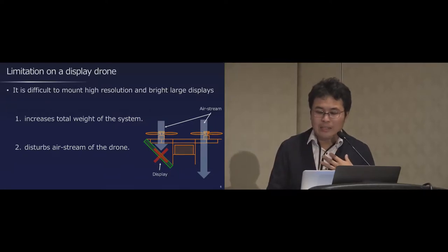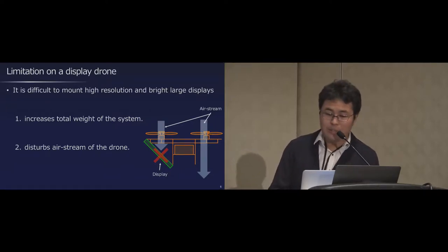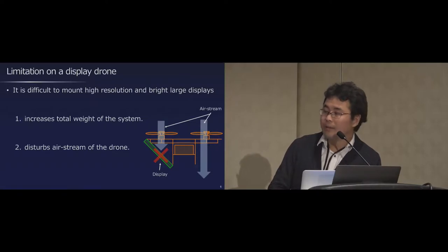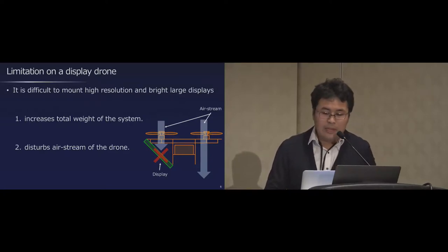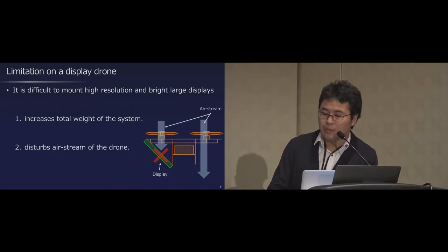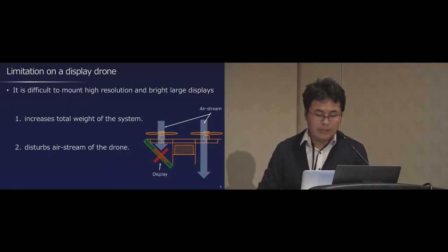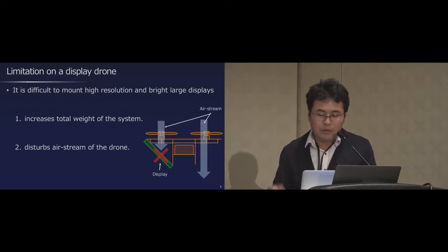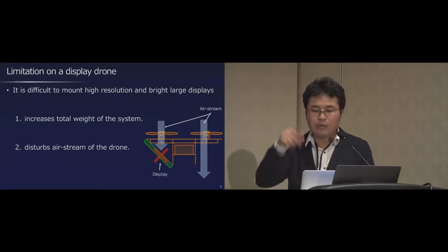However, few research has proposed high resolution and bright large display on drone. It may be because of two reasons. One reason is that high resolution large display increases the total weight of the system, so it makes it impossible to fly. The other reason is that the display disturbs the drone's airstream from the top to the bottom, and the fine airstream is necessary for stable flight. Especially if displays are placed on the top or bottom, the problem becomes more serious.